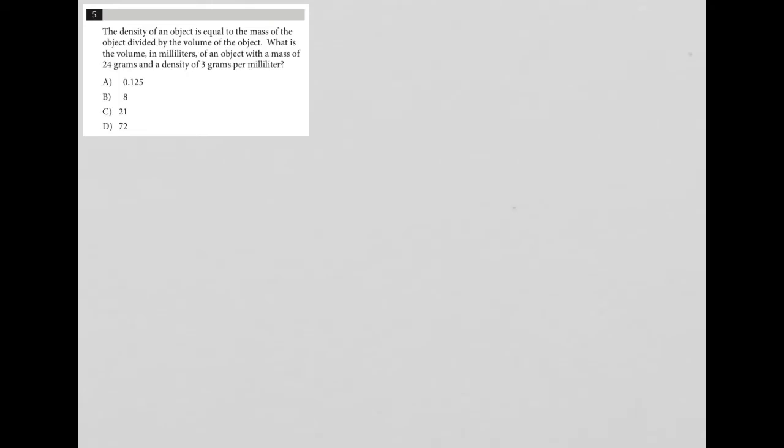This question says the density of an object is equal to the mass of the object divided by the volume of the object. So I'm going to translate that. D for density - I'll just write it out. Density is equal to mass divided by volume.